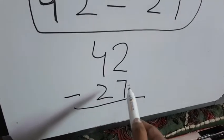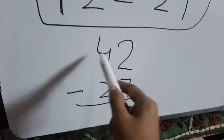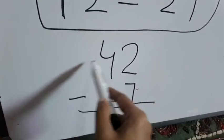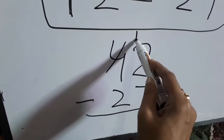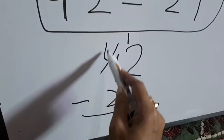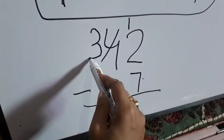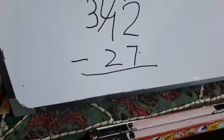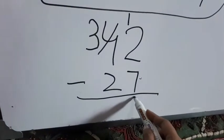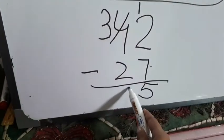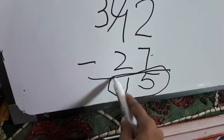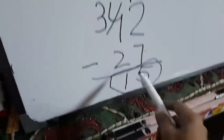Is two smaller than seven or greater? Two is smaller than seven, so we have to borrow one digit from here. Borrow one, make it twelve. Four minus one is three. Now, twelve minus seven — what is twelve minus seven? Five.